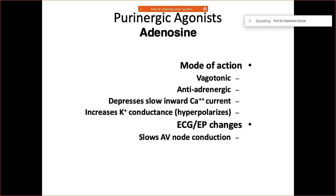Adenosine affects the slow inward calcium current and causes hyperpolarization. On the ECG or in the EP study, we can see slowing of AV node conduction. It is described as a purinergic agonist.